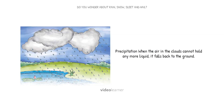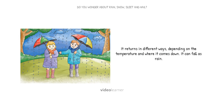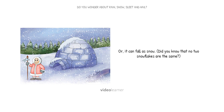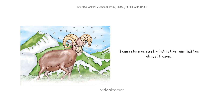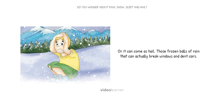Precipitation: when the air in the clouds cannot hold any more liquid, it falls back to the ground. It returns in different ways depending on the temperature and where it comes down. Did you know that no two snowflakes are the same? It can return as sleet, which is like rain that has almost frozen, or it can come as hail — those frozen balls of rain that can actually break windows and dent cars.